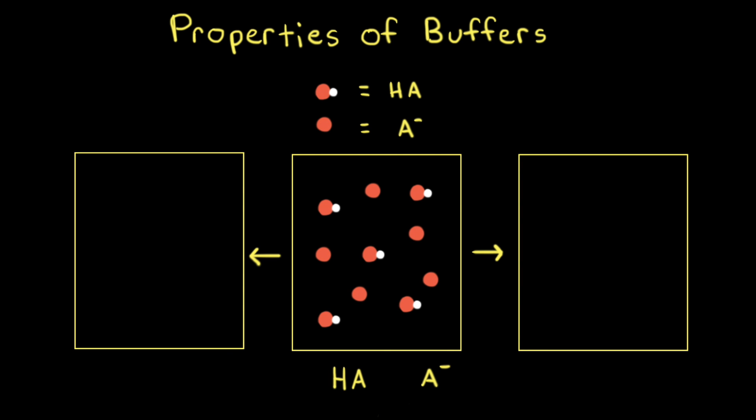A buffer solution consists of a significant amount of a weak acid and its conjugate base. Let's say we have a generic weak acid HA and its conjugate base A-, and we're going to use some particulate diagrams to try to understand how buffers work.